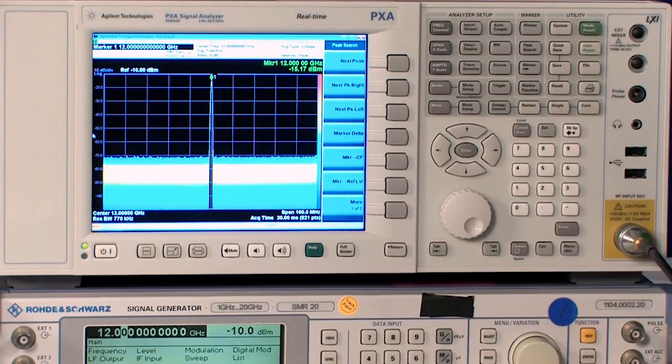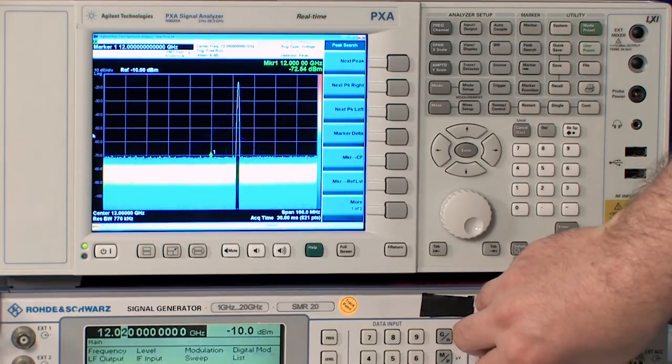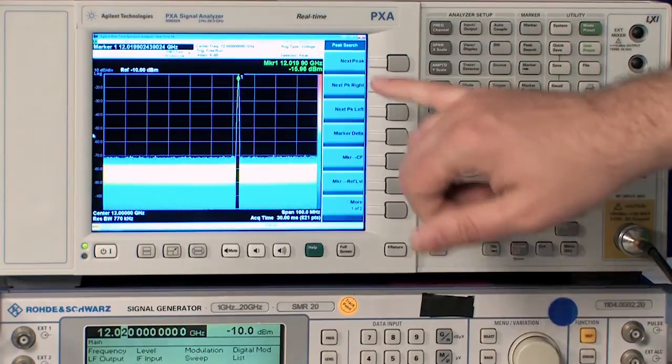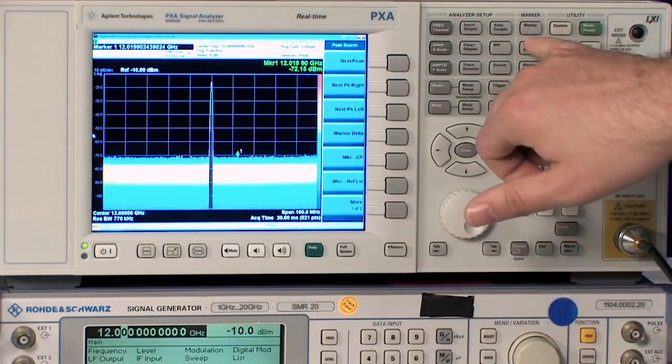We are showing now an Agilent PXA with the real-time capability enabled. It's being driven by a microwave signal generator to produce a 12 gigahertz CW signal. You'll notice as I adjust the frequency of the microwave signal generator and adjust the marker peak, I'm accurately measuring the signal as it changes frequency.